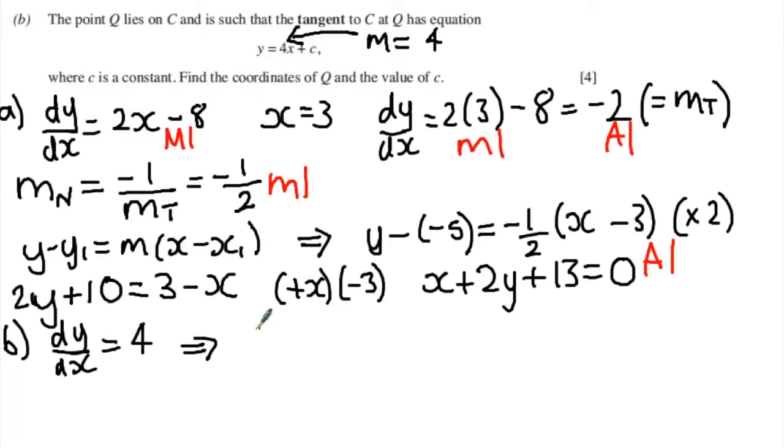Well, that leads us to say that the expression that we've got for the gradient, 2x minus 8, must be equal to 4. If we add 8 to both sides and then divide by 2, we're going to find 4 plus 8 is 12, divided by 2 is 6, and find that the x coordinate is 6.